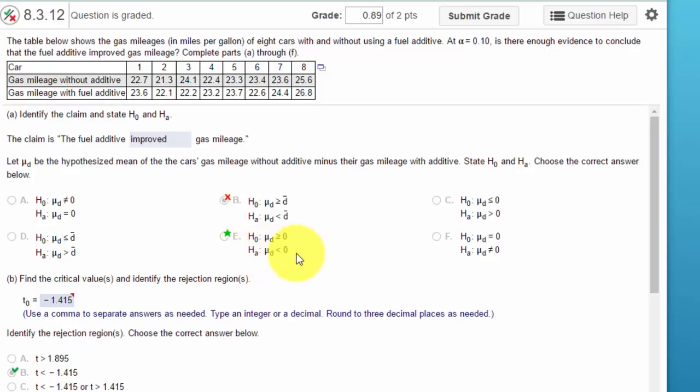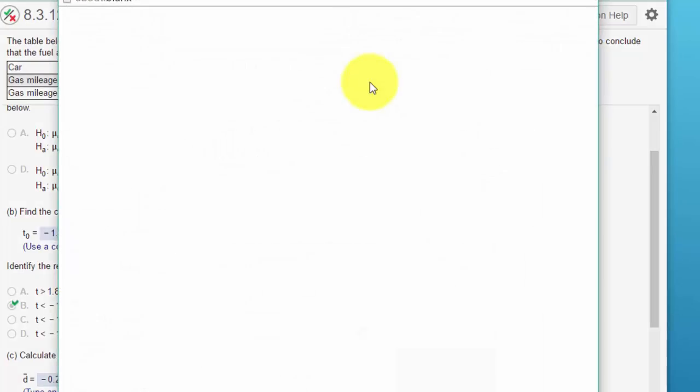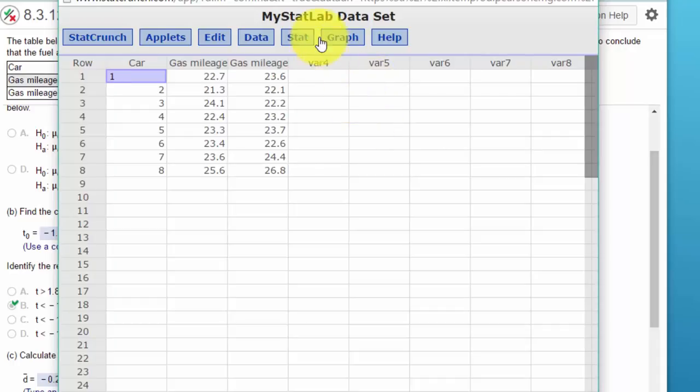So that has to be the alternative, which is the claim. The null is always an equality, which means it's greater than or equal, equal, or less than or equal. So those are our hypotheses. Let's find the critical value. We've got an alpha of 0.1, and I'm going to go ahead and just load up this data in StatCrunch.